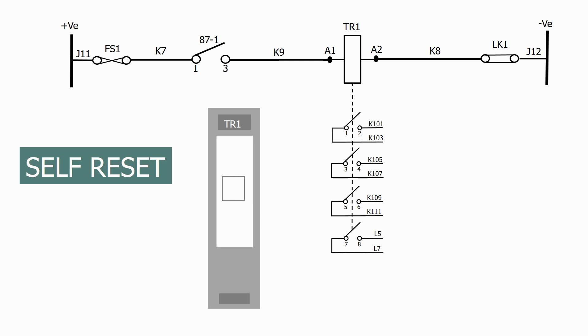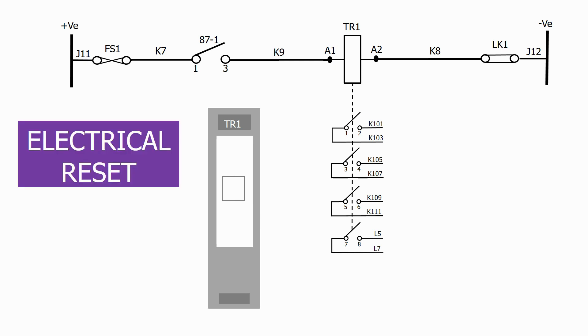The next option is electrical reset. In this configuration, when the relay coil is energized, the flag operates, but this time the flag and the contacts don't automatically reset when the initiation is removed and the coil de-energizes.